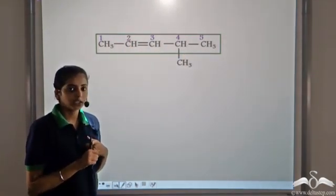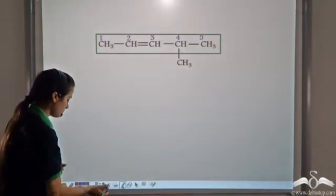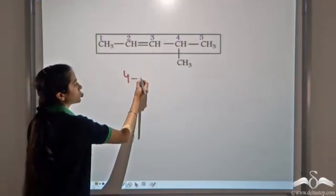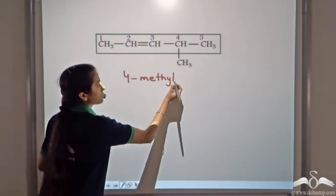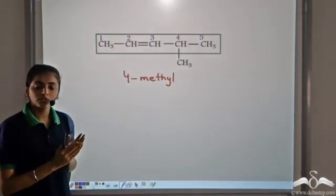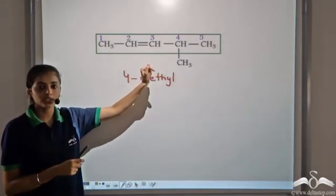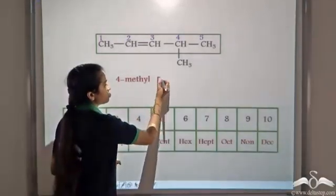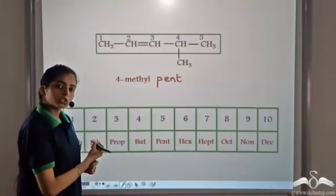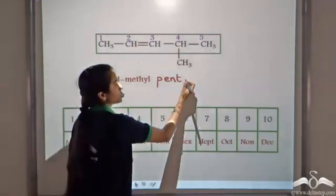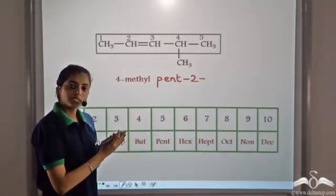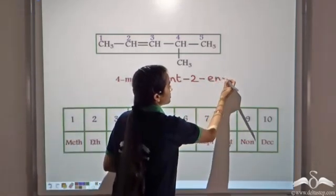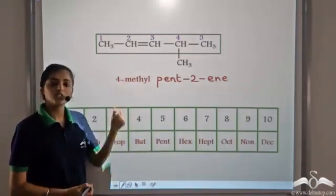The first step is to write the prefix. We have one substituent — a methyl group at position 4 — so the prefix is 4-methyl. The word root comes from 5 carbon atoms in the longest chain, giving 'pent.' The functional group is at position 2, and since it is an alkene the suffix is '-ene.' So the IUPAC name of this organic compound is 4-methylpent-2-ene.